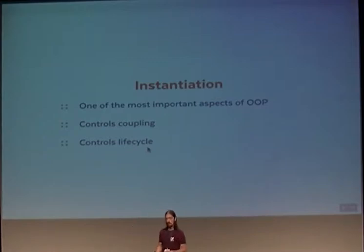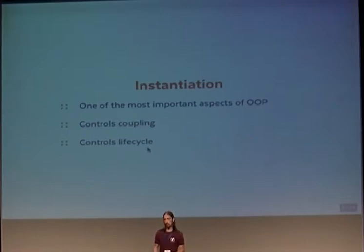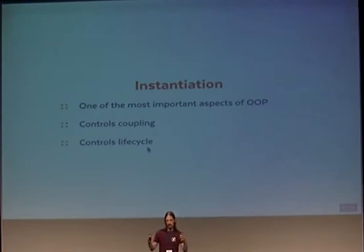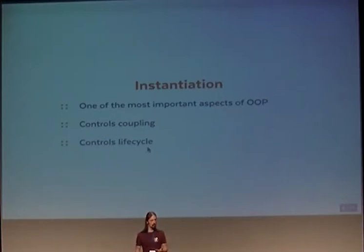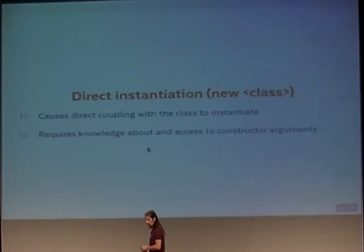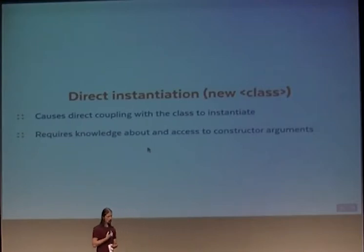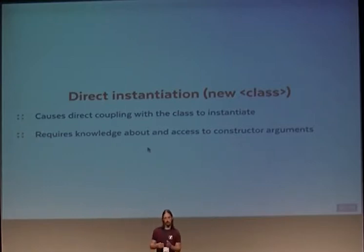Instantiation also controls the life cycle of objects. If you can avoid instantiating an object, you can ensure it won't consume too many resources and slow down your program. The entire life cycle of an application is basically a tree of life cycles of individual objects, and you should explicitly control that tree and how individual sub-elements are instantiated. The ways to instantiate something are very diverse, so let me go over some of them.